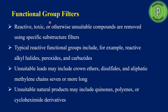The next method is functional group filters. Some functional groups are reactive, some are toxic, and some make unsuitable compounds — all of these must be eliminated. Different substructure filters help eliminate these reactive functional groups, which include alkyl halides, peroxides, carbosides, and unsuitable leads such as crown ethers, disulfides, and aliphatic methylene chains that are seven or more carbons long. If these are not eliminated early they will fail in the clinical trial process, so they are eliminated during virtual screening.